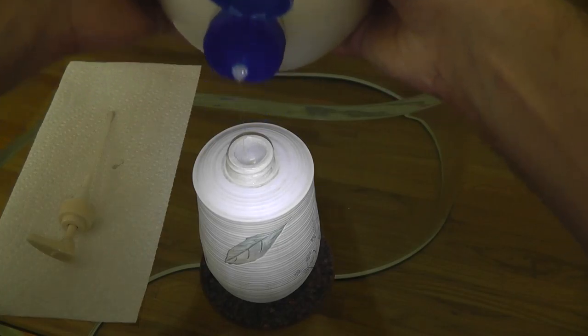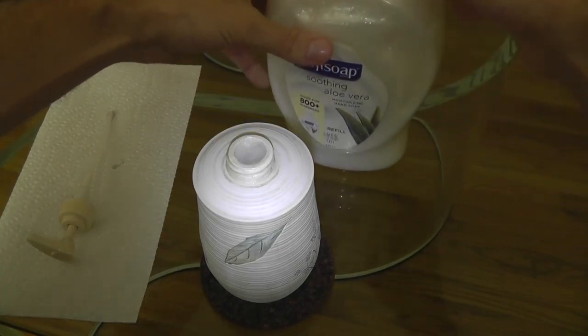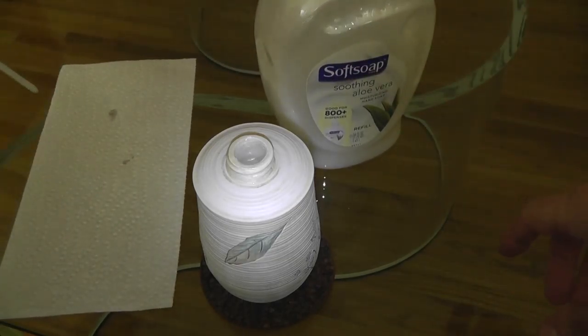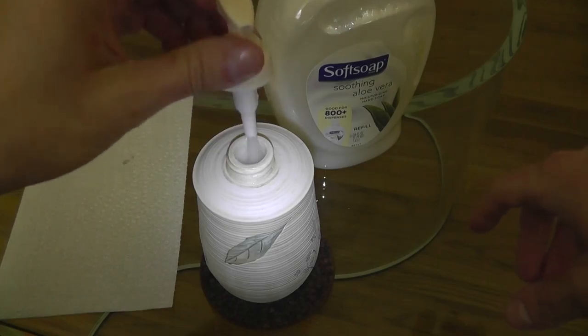Once the dispenser is as good as full, we slow down so the soap does not overflow. Also consider that we have to put the pump back in, which will make the soap level rise a little bit.